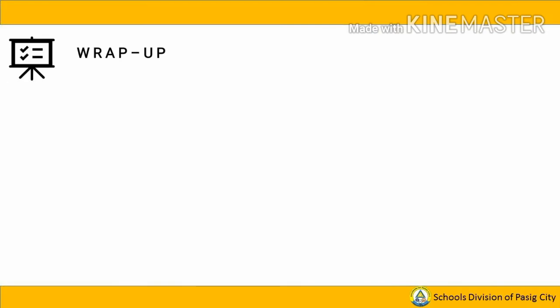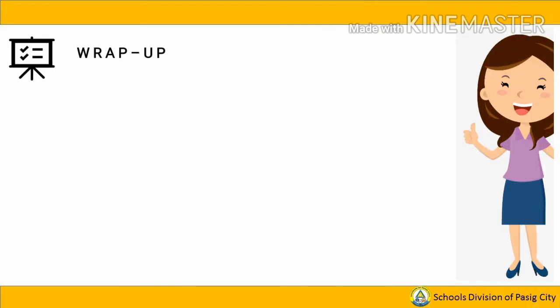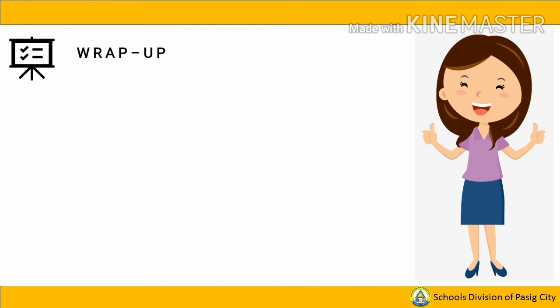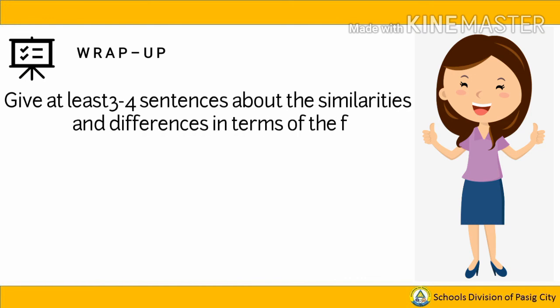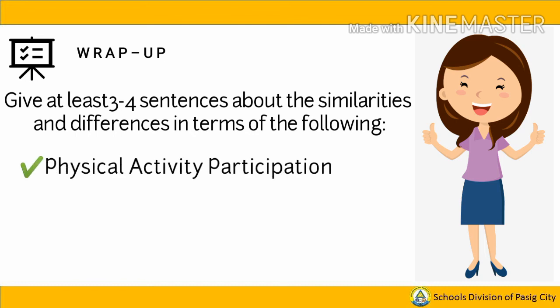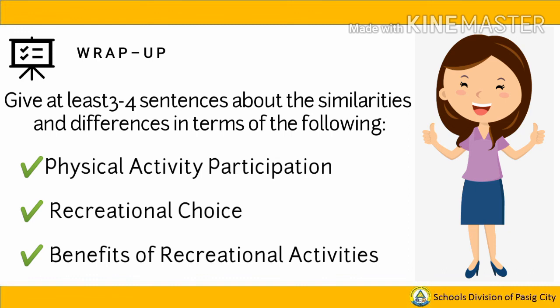Now to wrap up our lesson. After discussing the nature and basic knowledge on achieving a healthy lifestyle through active participation in recreational activities both indoor and outdoor, give at least 3 to 4 sentences about the similarities and differences in terms of: 1. Physical activity participation. 2. Recreational choice. And 3. Benefits of recreational activities.